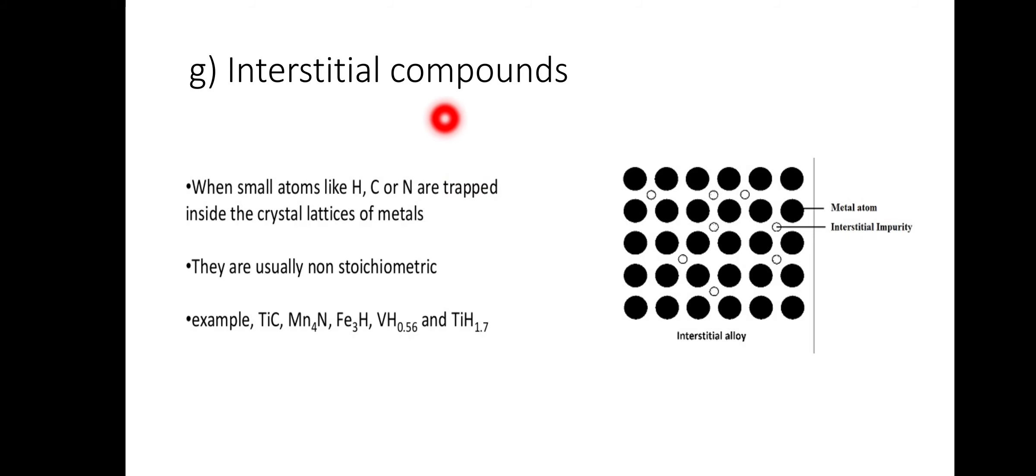Interstitial compounds are those compounds that settle in the empty spaces of metal. When small atoms like hydrogen, carbon, nitrogen are trapped inside the crystal lattice of metals, the black dots show the metal atoms and the interstitial impurities are like white dots. They are usually non-stoichiometric, whose proportions cannot be represented by a ratio of small natural numbers.